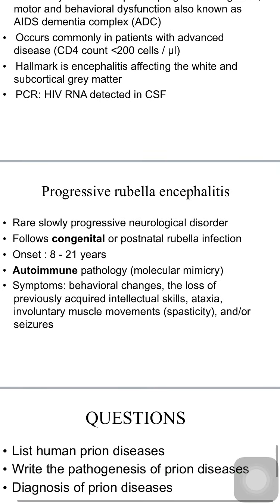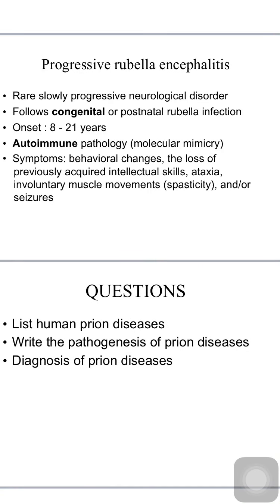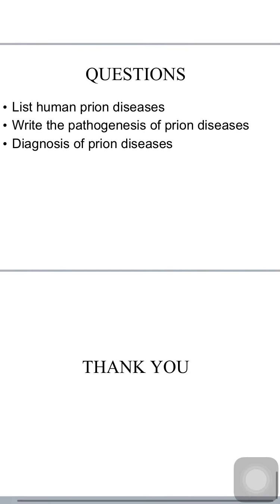Progressive rubella encephalitis is a rare, slowly progressive neurological disorder following congenital rubella infection or postnatal rubella infection, with disease onset after 8 to 21 years. It has an autoimmune pathology involving molecular mimicry. Symptoms include behavioral changes, loss of intellectual skills, ataxia, spasticity, and seizures.